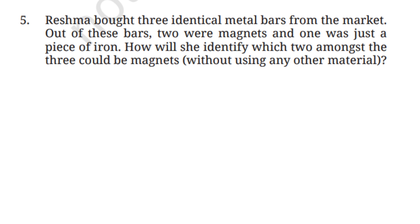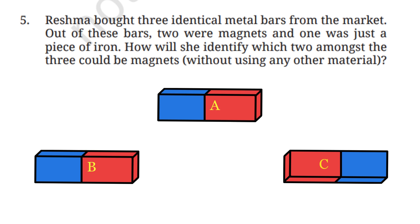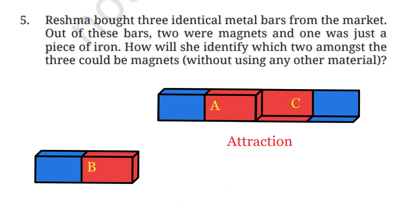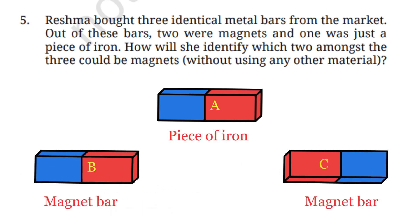Question 5: Reshma bought three identical metal bars — two were magnets and one was just a piece of iron. How will she identify which two are magnets without using any other material? Reshma can identify the two magnets by trying to make the bars attract or repel each other. She should take one bar and bring it close to the other two, one at a time. If the bar shows attraction from both ends to another bar, that second bar is likely just iron, because iron gets attracted to magnets but does not repel.